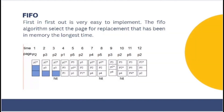FIFO stands for First In First Out. It is the method of organizing that involves queuing elements in a sequence such that the first element added is the first element to be removed. FIFO is commonly used as a data structure for managing data that needs to proceed in a specific order. It can be implemented as a simple array or linked list where elements are added to one end and removed from the other.